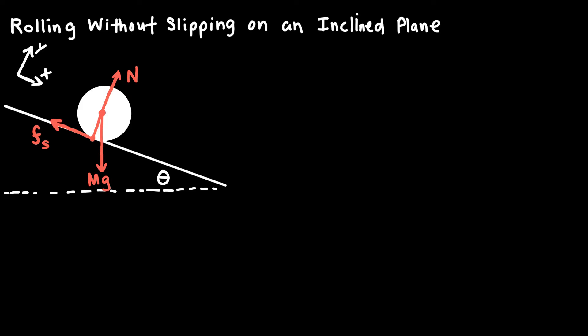What I want to determine is the linear acceleration of this rolling object as it goes down. We're trying to find the acceleration of the center of mass, which I'll call A. We need to differentiate between that acceleration and the angular acceleration, alpha, because as this object rolls down the inclined plane, it's going to be picking up speed and its angular speed is also going to be increasing, so we'll have an angular acceleration, alpha, as well.